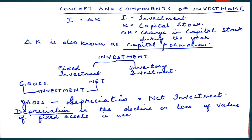Investment is also split up into gross investment and net investment. Gross investment is inclusive of depreciation. When we subtract depreciation from gross investment, we get net investment. Depreciation is the decline or loss of value of fixed assets in use. Any plant, machinery, or fixed asset is liable to depreciate in value over a year. The depreciation cost is set aside, and when subtracted from gross investment, what remains is net investment.